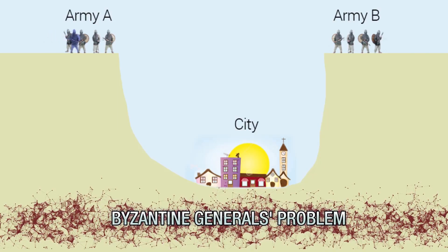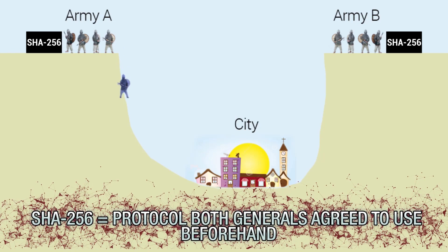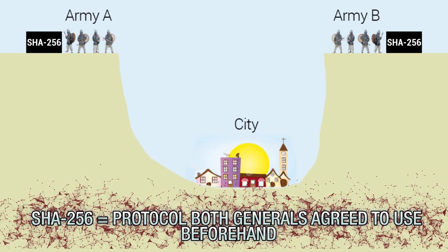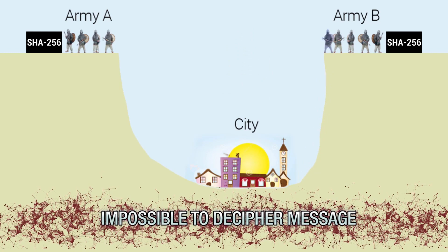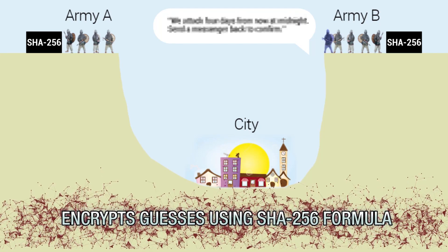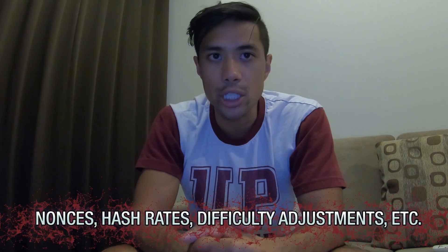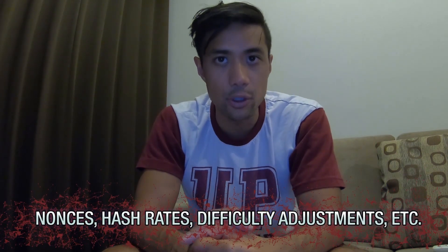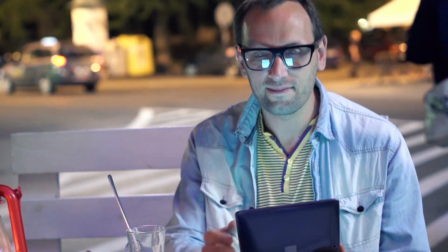Going back to the Byzantine Generals Problem, think of the 64-digit answer as an encrypted message one of the generals is trying to send, and SHA256 as a protocol the generals have both agreed to use beforehand. If the messenger gets caught in the town below, it's practically impossible to decipher the message. But once this message gets into the other general's hands, he can do the work of guessing a ton of different message possibilities, encrypt them using the SHA256 formula, and once his output matches the encrypted message received, he'll know exactly what the other general was trying to say. There are other aspects to proof-of-work and mining — like nonces, hash rates, and difficulty adjustments — but my main goal is to give you a basic understanding. A quick search on Google or YouTube will yield many resources to educate yourself further.